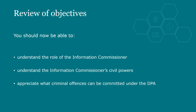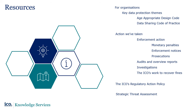You have now completed Module 13 and should now be able to understand the role of the Information Commissioner, understand the Commissioner's civil powers, and appreciate what criminal offences can be committed under the DPA. There is further information on these topics in our guidance and on our website, and you will find the relevant links in your notes. There are more topics under all the headings in the guidance, but this highlights some of the key areas for further reading. I hope you've enjoyed the module and that it's been useful for you. Thank you for listening.